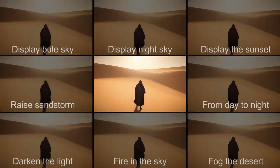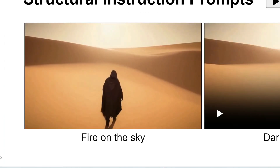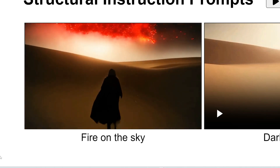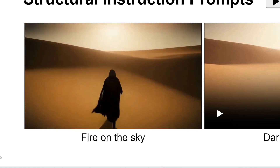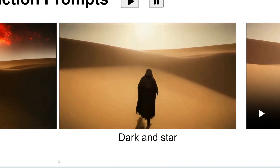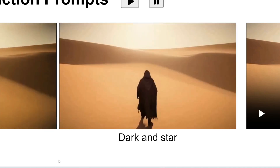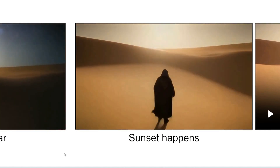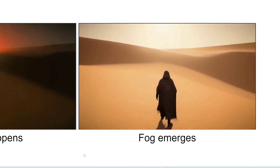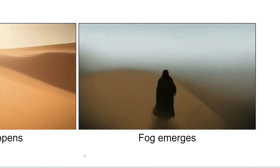Here are some even cooler things you can do with it. The output is a continuous video, and you can prompt anything and it will change the gameplay to match your prompt. For example, the prompt 'fire on the sky' changes the scene accordingly. 'Dark and star' gradually turns it into nighttime with a starry sky. 'Sunset happens' generates a sunset, and 'fog emerges' turns the environment very foggy.